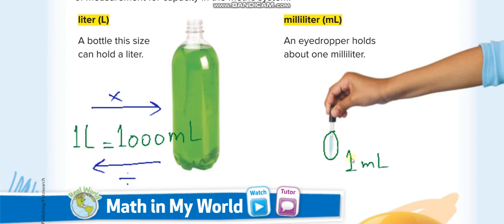A liter is a big unit. You can see that this full bottle of liquid is one liter, and one liter is equal to 1000 milliliters. It means you need 1000 eyedroppers to fill this bottle.